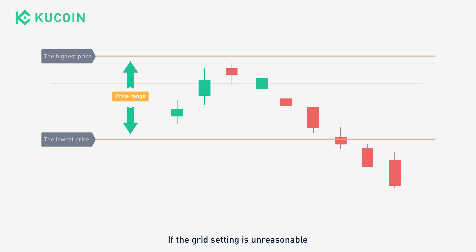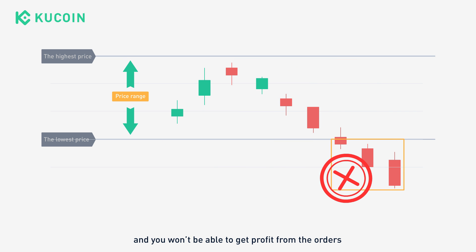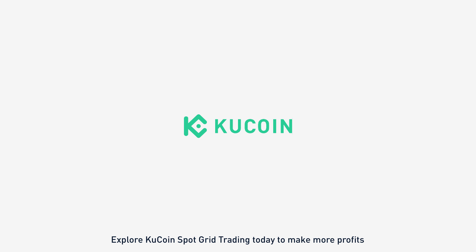If the grid setting is unreasonable and the market price is outside of the preset price range, you won't be able to get profit from the orders. Explore KuCoin grid trading today to make more profits.